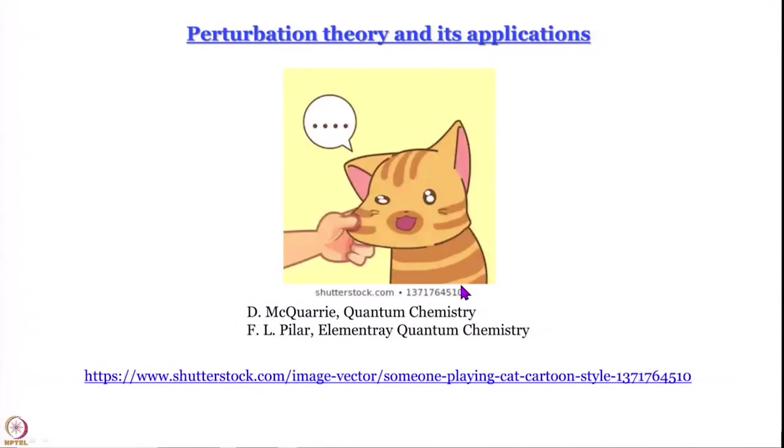We have been introduced to perturbation theory and discussed why a certain cat represents it nicely. Today we will complete our discussion: we will get an expression for delta E, the first order correction to energy, and do a very simple example of an application of perturbation theory. Then for the next few modules we are going to talk about applications in progressively more chemistry-related systems.